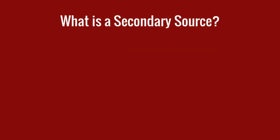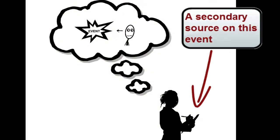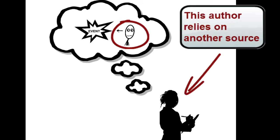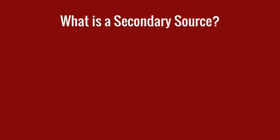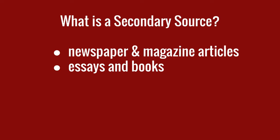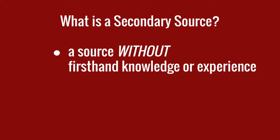A secondary source is created by someone who did not witness or experience the event first-hand. Thus, the author must rely on other sources of information. Examples of secondary sources can include newspaper and magazine articles, essays, books, documentaries, and even Facebook posts and tweets, as long as the person composing them does not have first-hand knowledge of the subject.